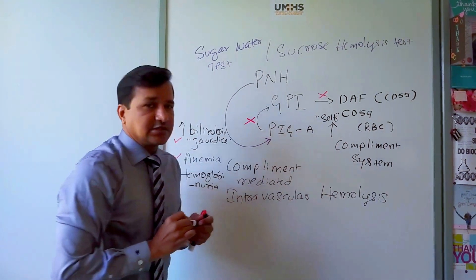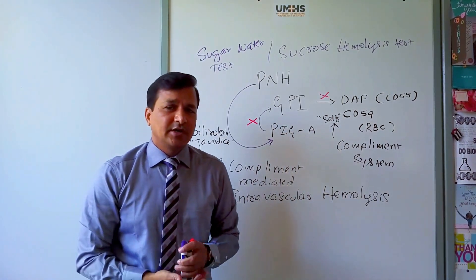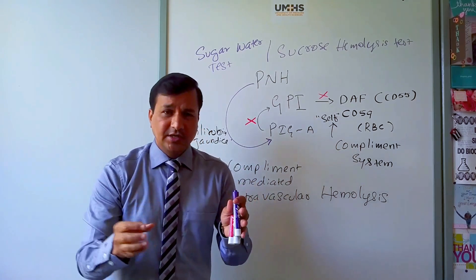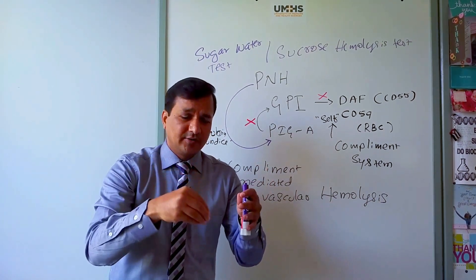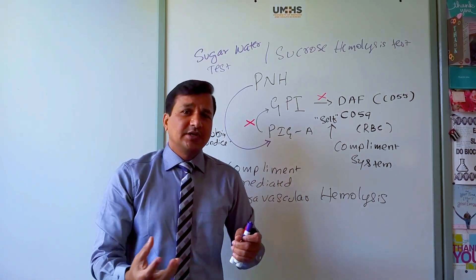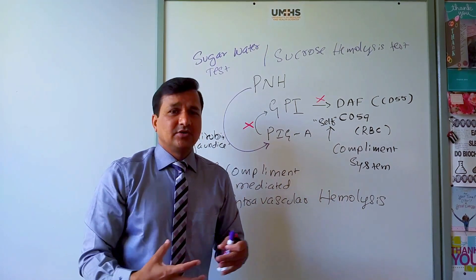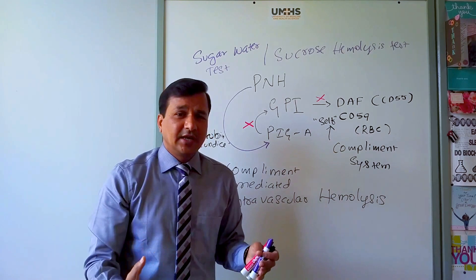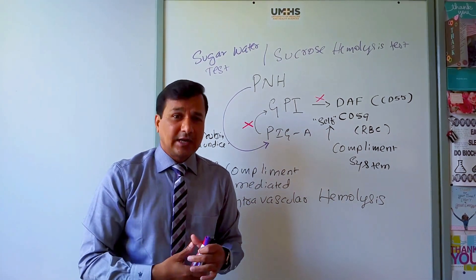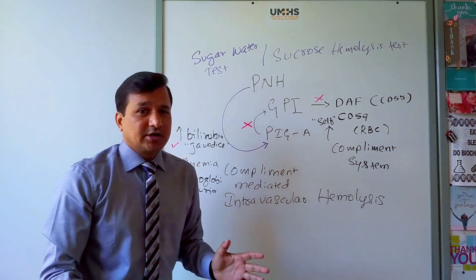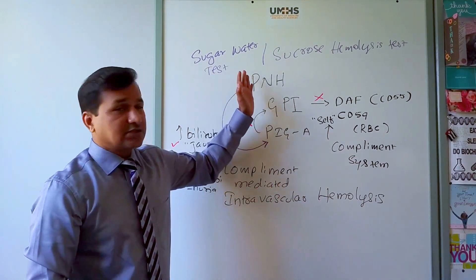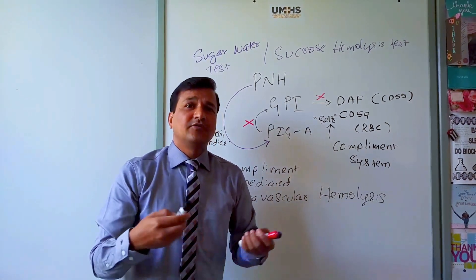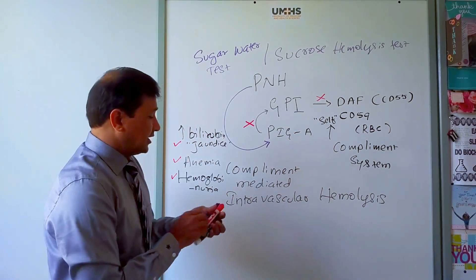In the sucrose hemolysis test, whole blood is placed in a hypotonic sucrose solution. Red blood cells in hypotonic conditions recruit complements; if those cells lack DAF and CD59, the complements lyse them. Hemolysis in the hypotonic solution is a positive result, indicating the need for a confirmatory test.